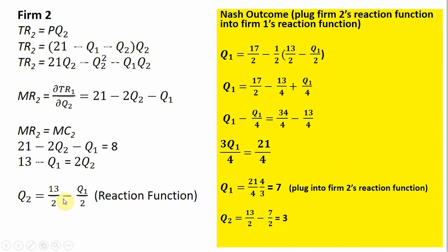So what's the output of Firm 2? I'm just plugging that in over here. And then simplifying it, we see that Firm 1 will produce 7 units of output. Plugging that 7 into Firm 2's reaction function, Firm 2 will produce 3 units of output.